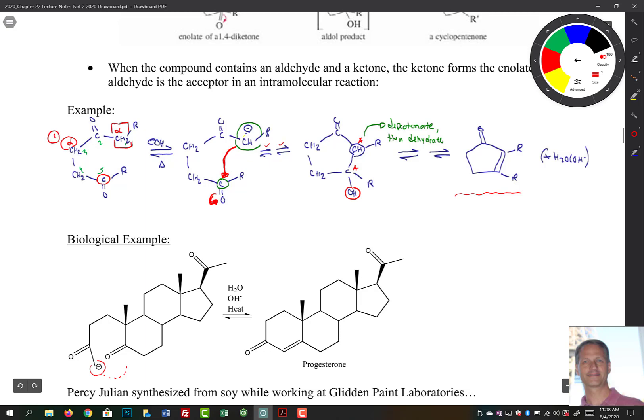So notice that if we deprotonated it at this first position right here, that would give us an enolate that's a negative charge there, that's then connected to that carbon, that would give you a three-membered ring. That's not good. If we deprotonate it here though, we have a ring that has one, two, three, four, five carbons. That's better.